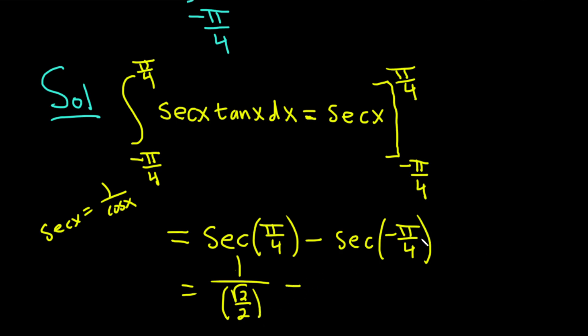Secant of negative pi over 4 is also the square root of 2 over 2. So this is 1 over the square root of 2 over 2. These are exactly the same thing, so when you subtract them, you get 0. And so the answer to this problem is just 0.